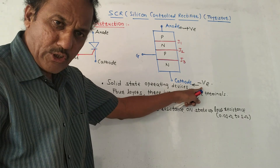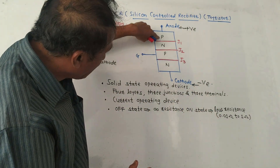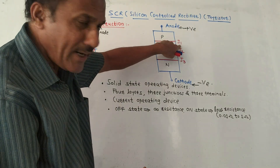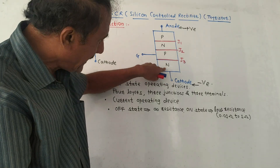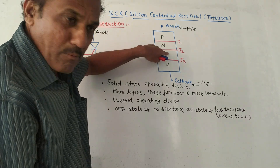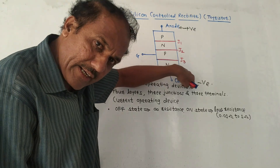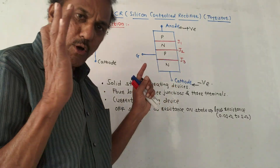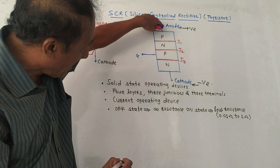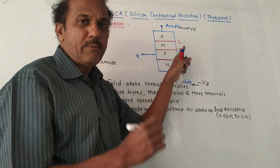When the positive terminal of the battery is connected to the anode and the negative terminal to the cathode, the SCR is forward biased. The first P-layer is connected to the positive terminal, so junction J1 is forward biased. The last N-layer is connected to the negative terminal, so junction J3 is also forward biased. Under such conditions, junction J2 — between the first N-layer and second P-layer — will be reverse biased.